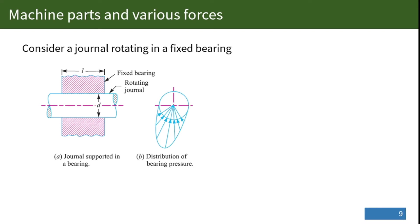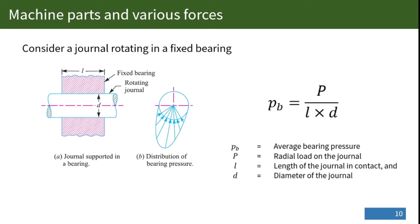Since the actual bearing pressure is different and difficult to determine, the average bearing pressure is usually calculated by dividing the load by the projected area of the curved surfaces in contact. Thus, the average bearing pressure for a general supporting bearing is given by the following equation.